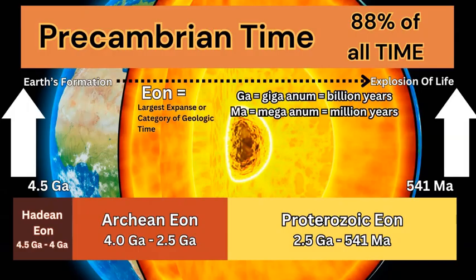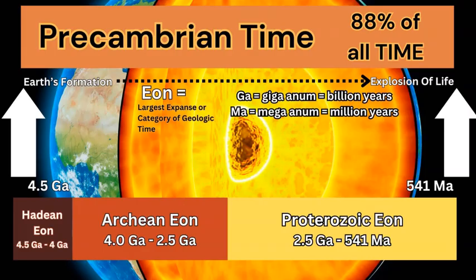The best place to start for any timeline is the beginnings. We're looking at the Earth's formation around 4.56 billion years ago and a very large chunk of geologic history called Precambrian time, which means it's a time before there was multicellular life on the planet — only single-celled life. This large extent of time equates to about 88% of all Earth's history, around 4 billion years, and is broken into three main subdivisions or eons: the Hadean, Archean, and the Proterozoic.